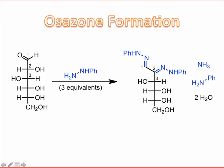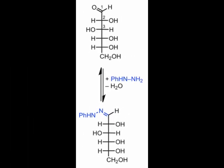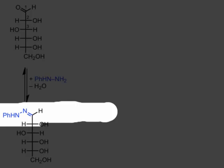To begin, you should recognize phenylhydrazine as a potent nucleophile and the carbonyl carbon of glucose as a good electrophile. Like related amines, phenylhydrazine can condense with the carbonyl group to form a compound containing a new C-N double bond. We call this particular functional group, which possesses both a C-N double bond and a nitrogen-nitrogen single bond, a hydrazone.